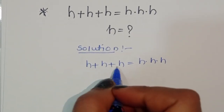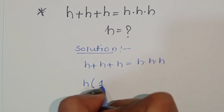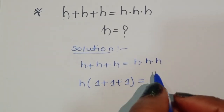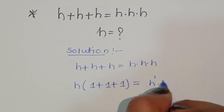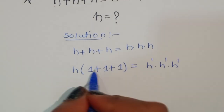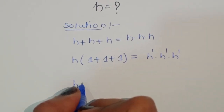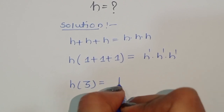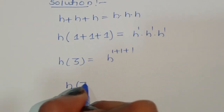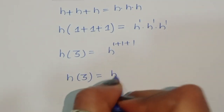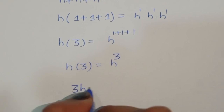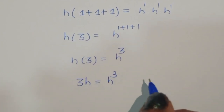We can take h as a common factor on the left side: h times (1 plus 1 plus 1) equals h times 3, which is 3h. On the right side, h times h times h is h power 1 plus 1 plus 1, which equals h cubed. So we get 3h equals h cubed.